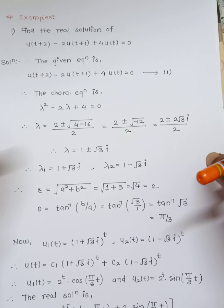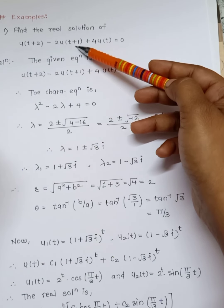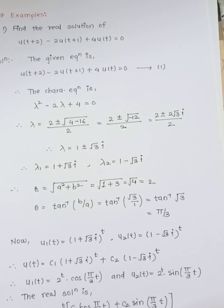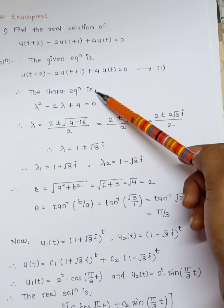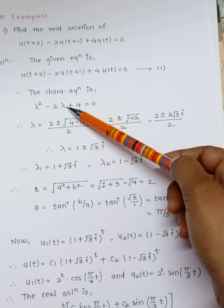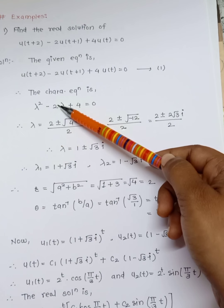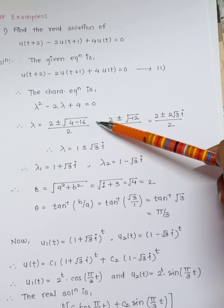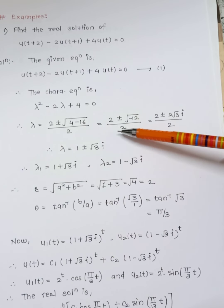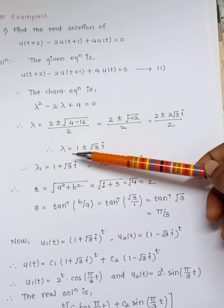Now we need to find the real solution of the given equation: u(t+2) - 2u(t+1) + 4u(t) = 0. The characteristic equation is λ² - 2λ + 4 = 0. Using the quadratic formula: λ = [2 ± √(4 - 16)] / 2 = [2 ± √(-12)] / 2 = [2 ± 2√3·i] / 2.